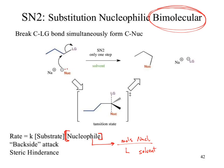The key term to remember for SN2 is 'backside attack.' The nucleophile must come in from the backside, opposite to where the leaving group is leaving. The leaving group leaves with electrons; if the nucleophile tried to attack from the same side, it would encounter those electrons — electron-electron repulsion — and no reaction would occur. So the nucleophile must come in from the complete opposite side.